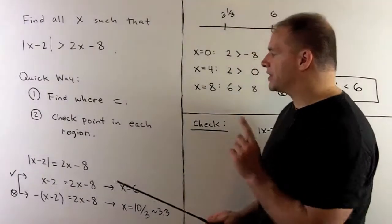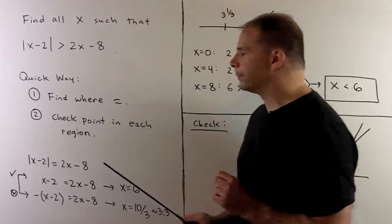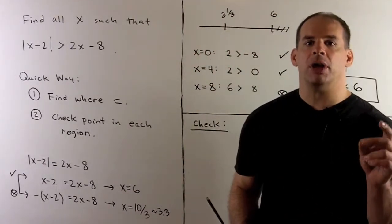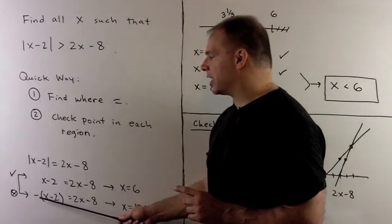If I solve for where the absolute value of x minus 2 is equal to 2x minus 8, I'll set up two equations, one with a plus sign, one with a minus sign.